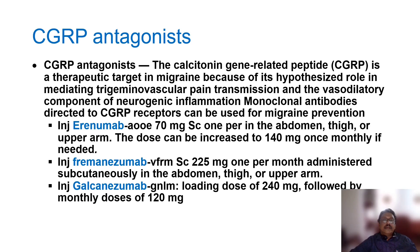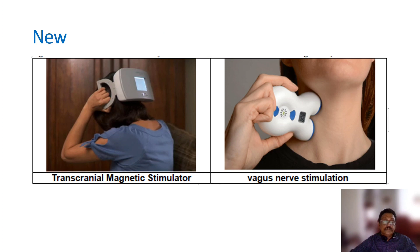Newer drugs include CGRP monoclonal antibodies such as erenumab, fremanezumab, and galcanezumab, which are directed against CGRP receptors and used for migraine prophylaxis. Transcranial magnetic stimulation and vagus nerve stimulation are also emerging treatments that give variable results and can be tried in acute migraine, though these may not yet be available in all countries.